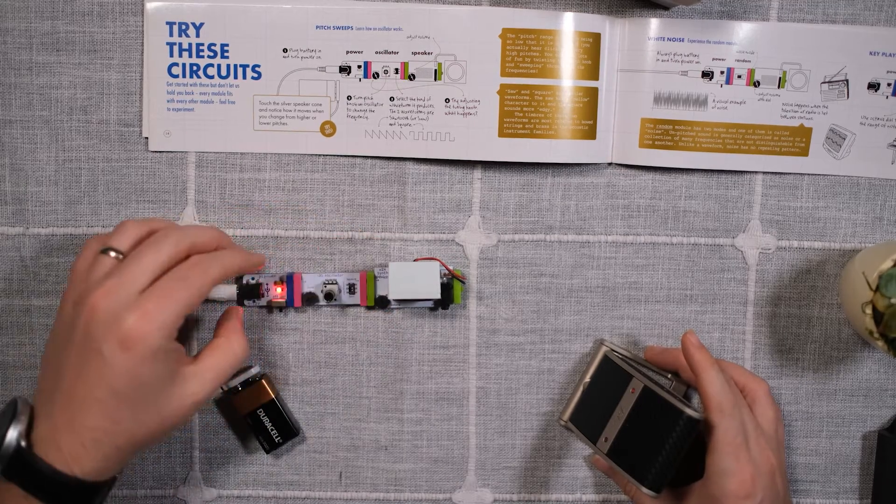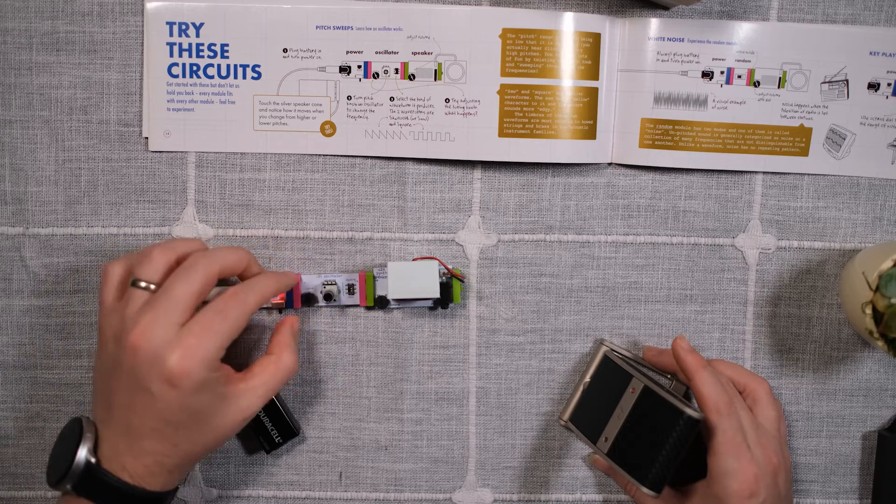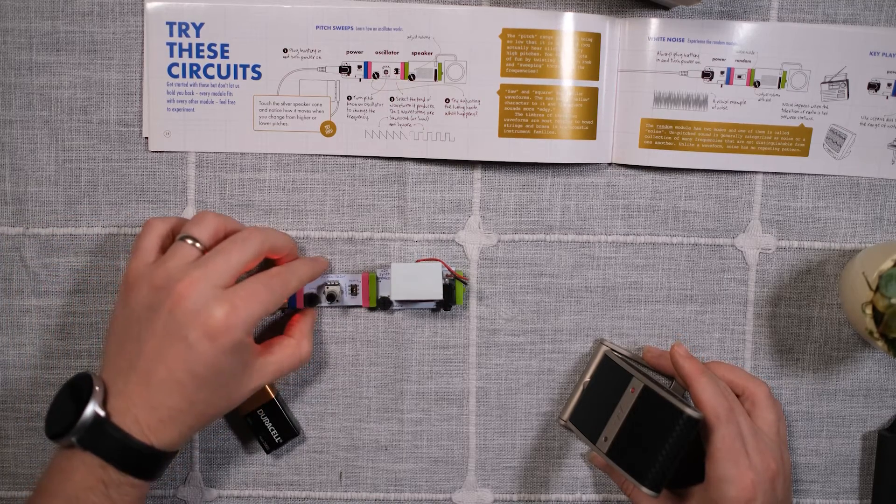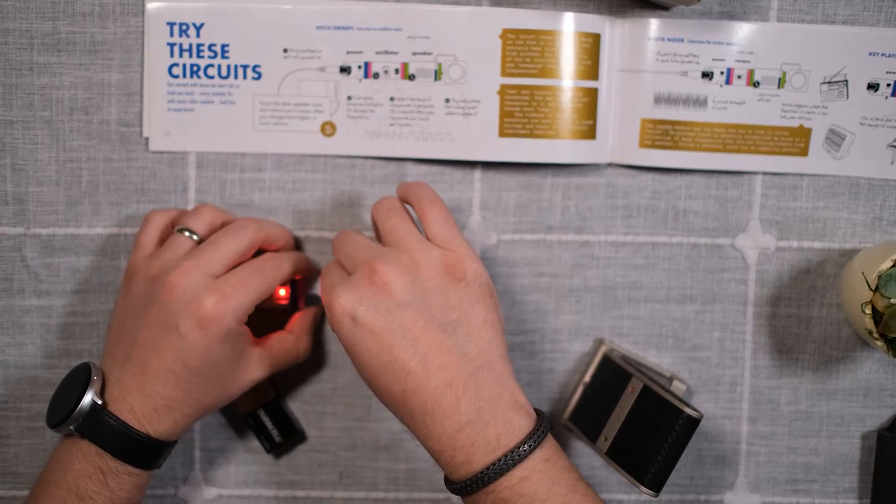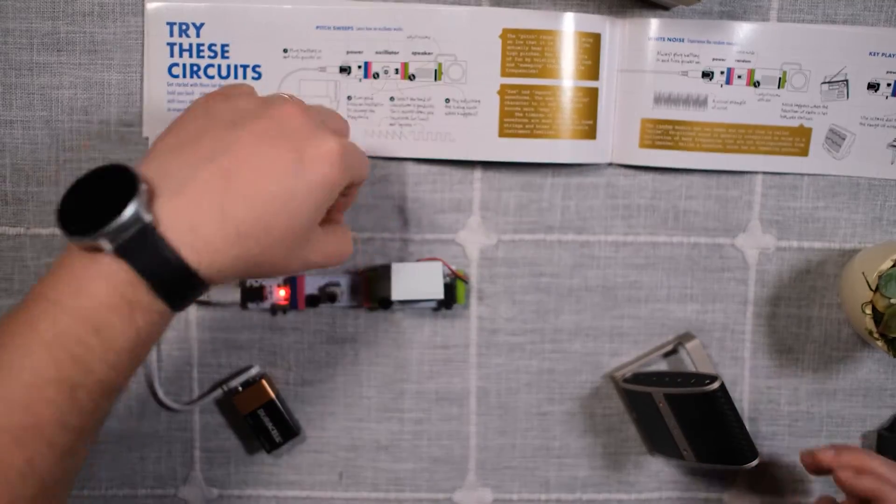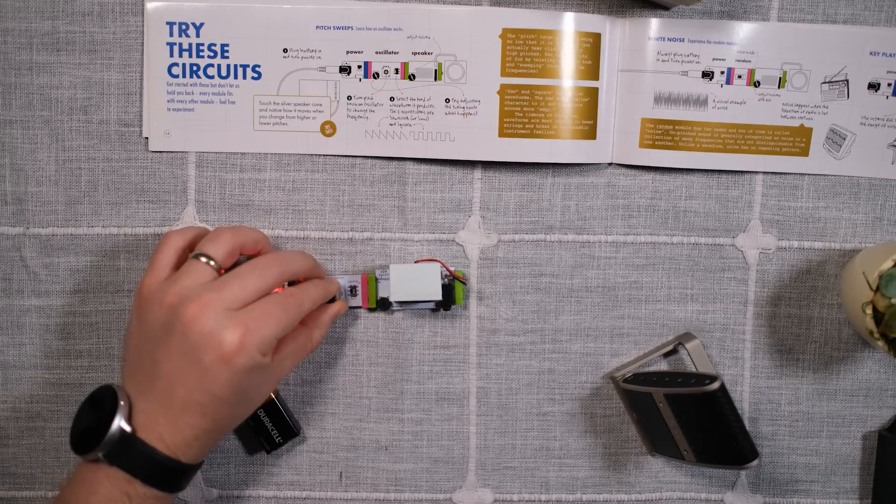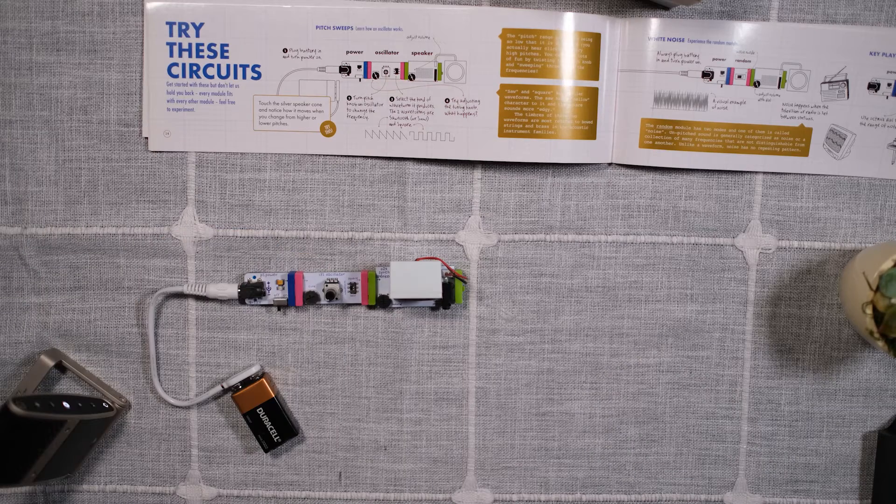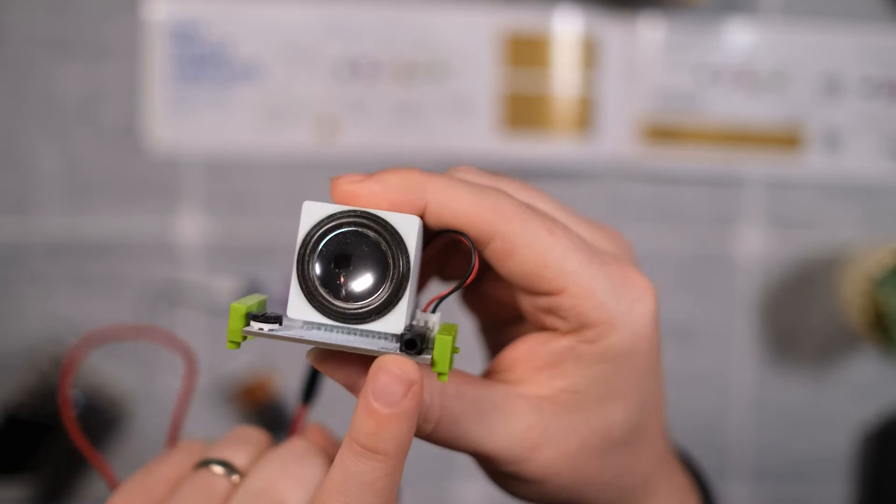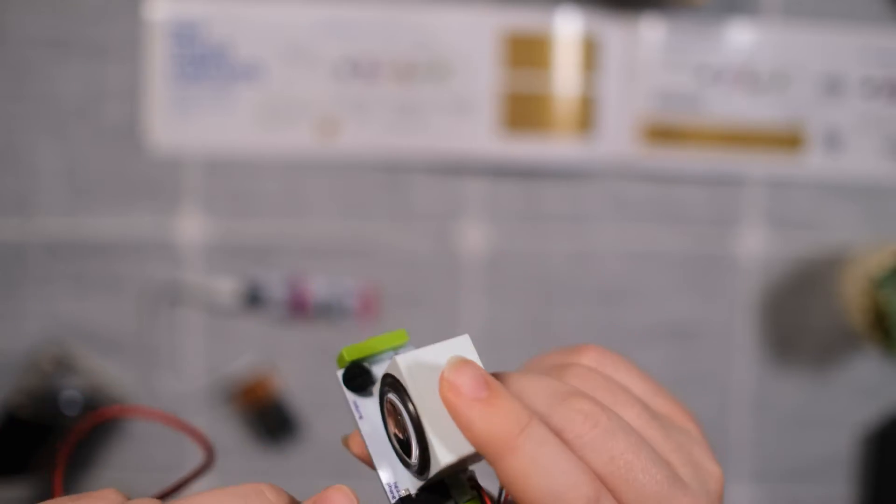So now it's on a saw waveform. You have the pitch right here. You can fine tune with this little knob. You can also change the waveform to a square. In addition to that, instead of using this little inbuilt speaker, it has also a mini jack input right here. So you can connect it to a recorder.